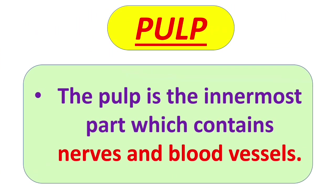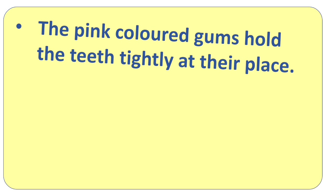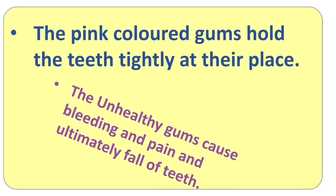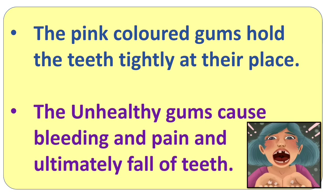Now we will talk about pulp. The pulp is the innermost part which contains nerves and blood vessels. It is much softer than dentine and enamel. Next are gums. The pink colored gums hold the teeth tightly at their place, and unhealthy gums cause bleeding and pain, and ultimately the falling of teeth.